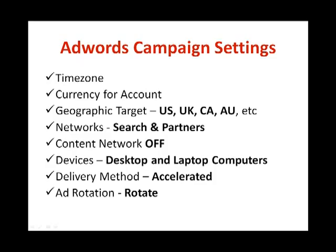When you start out, just use search and partners and keep the content network switched off. For devices, select desktop and laptop computers. For delivery method, select accelerated — this will allow your ads to be shown as quickly as possible so you can gather data and get traffic quickly. For ad rotation, select rotate — this rotates your ads between two or more ads, which is a split testing process that will help you optimize your campaign.